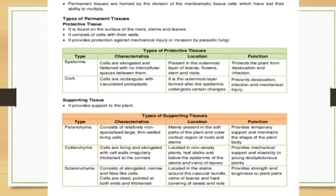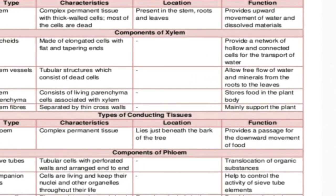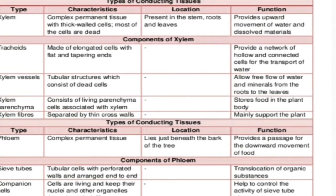Now let us discuss xylem and phloem. The conducting tissues, also known as vascular tissues, are complex permanent tissues because they are made up of more than one type of tissue. Xylem is that vascular tissue which transports water and dissolved minerals. It is a complex permanent tissue with thick-walled cells, and most cells are dead.